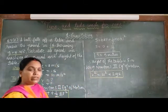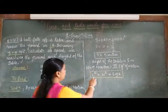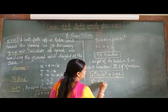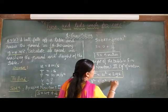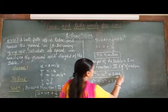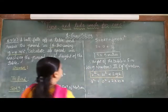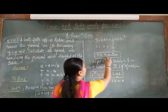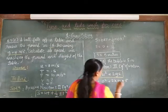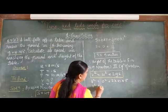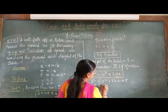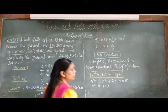Substitute in the formula, V square is equal to 0 square plus 2 into 10 into the displacement, now you know, 5. So, V square is equal to 2 into 5, 100. 2 into 5 is 10, 10 into 10 is 100.